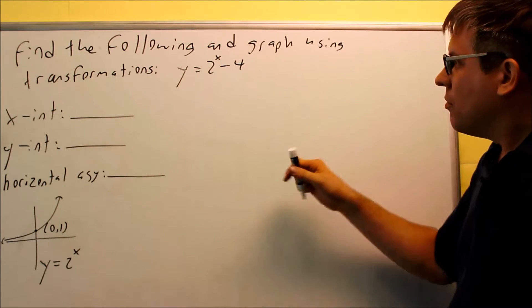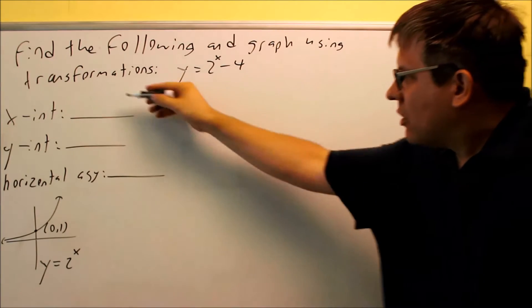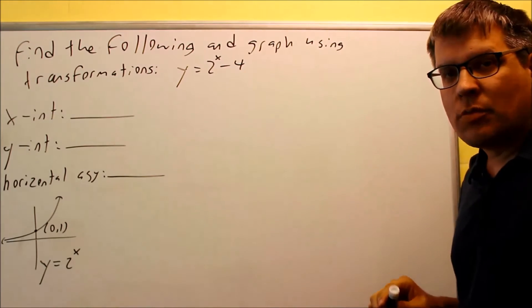Okay, we're getting into the graphs now. We're going to graph y equals 2 to the x minus 4, and we want to find this information, the intercepts, and also the horizontal asymptote.